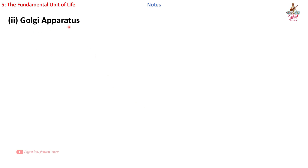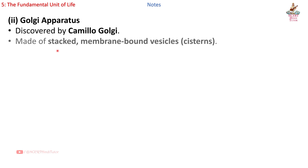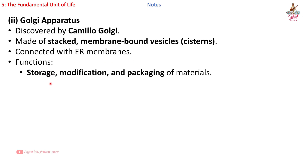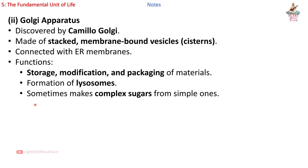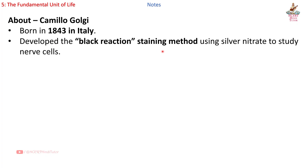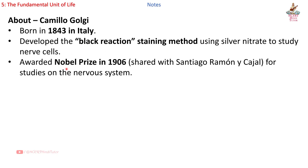2nd — Golgi apparatus, discovered by Camillo Golgi: made of stacked membrane-bound vesicles called cisterns, connected with ER membranes. Functions: storage, modification and packaging of materials, formation of lysosomes, and sometimes makes complex sugars from simple ones. Camillo Golgi was born in 1843 in Italy and developed the black reaction staining method using silver nitrate to study nerve cells. He was awarded the Nobel Prize in 1906, shared with Santiago Ramón y Cajal for studies on the nervous system.